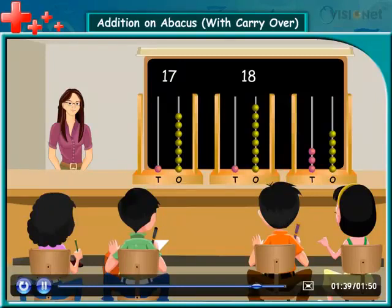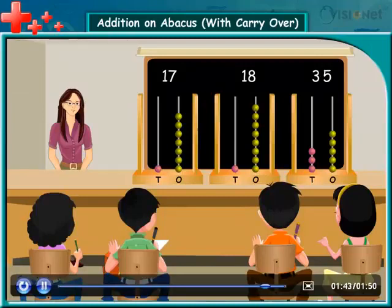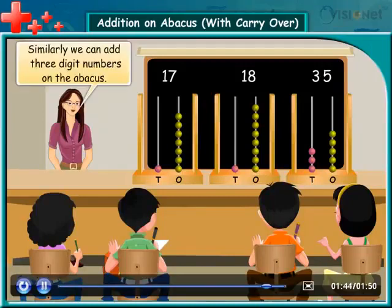Hence, the number represented is 35. Similarly, we can also add 3-digit numbers on the abacus.